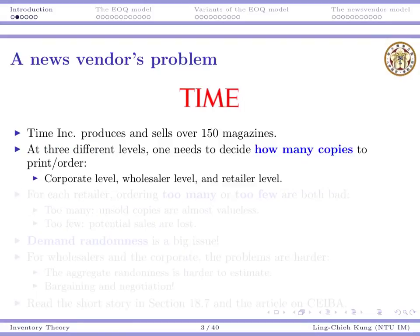So let's start with the motivation. We know that Time Inc. is one of the most famous companies producing and selling magazines — for example, Time magazine. At three different levels there are inventory problems, meaning how many copies to print or to order. The company at the corporate level must decide for each issue how many copies to print.